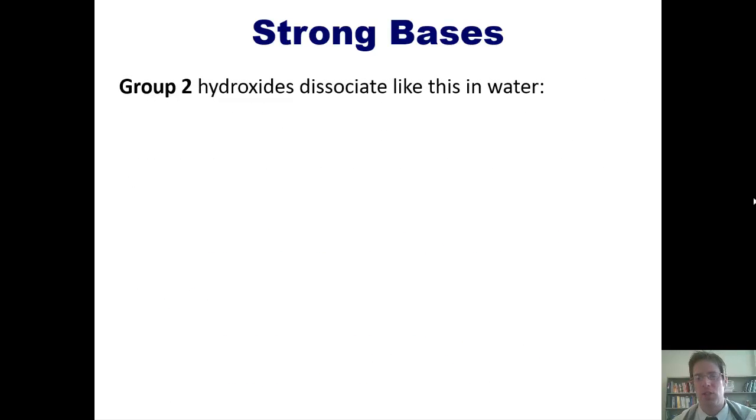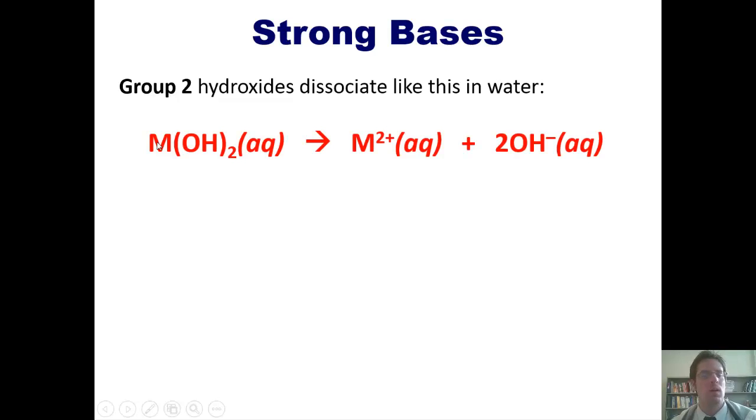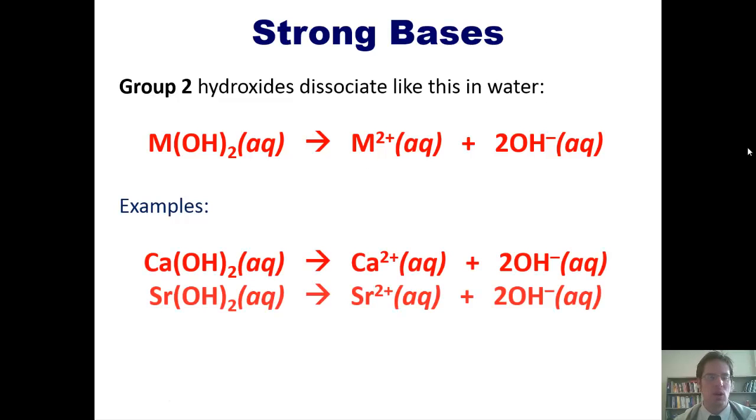Group 2 hydroxides dissociate like this in water, where eventually the substance will give off two equivalents of hydroxide and become a plus 2 charged cation. Examples of these include calcium and strontium hydroxide, as well as others that I'm not showing here.